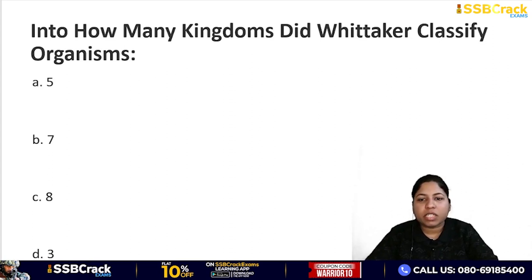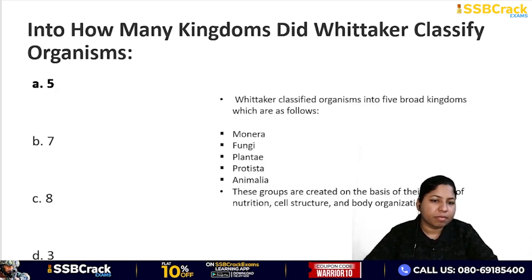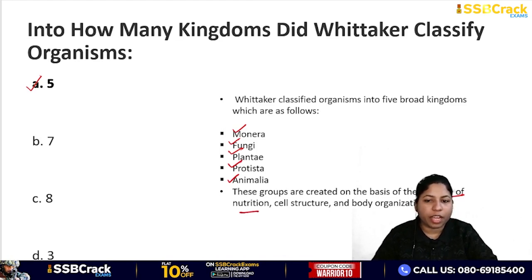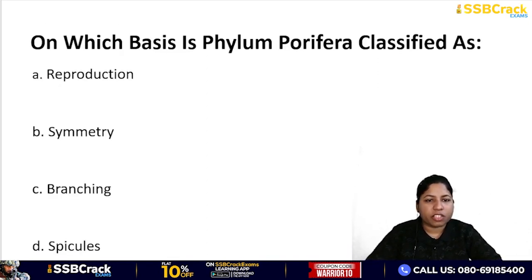Next question: into how many kingdoms did Whittaker classify organisms? The correct answer is five. The five kingdoms are: Monera, Fungi, Plantae, Protista, and Animalia. Questions have also been asked about the basis of this classification — which includes source of nutrition, cell structure, and body organization.